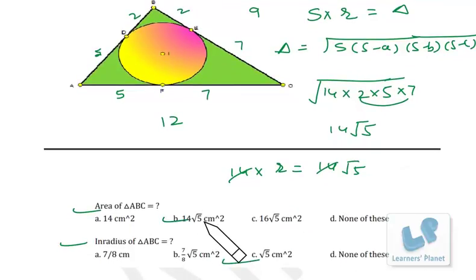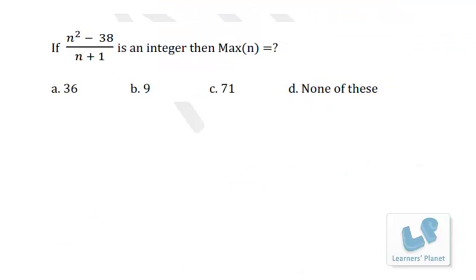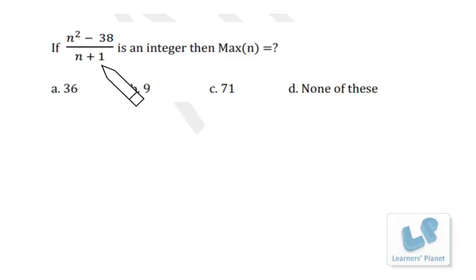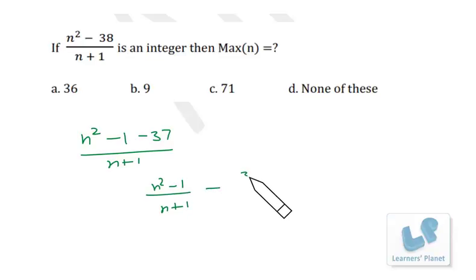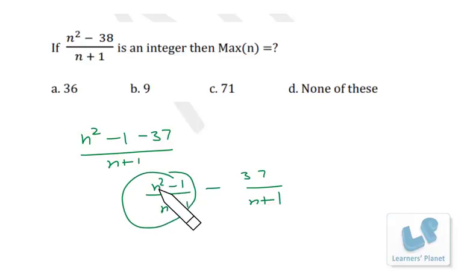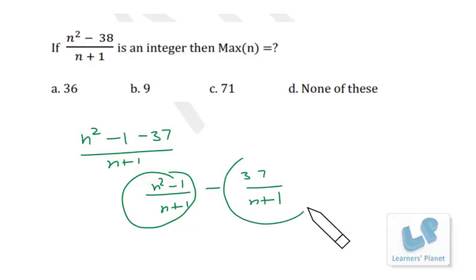Third problem: if (n² − 38)/(n + 1) is an integer, find the maximum value of n. Rewrite the numerator: n² − 38 = (n² − 1) − 37. So the expression becomes (n² − 1)/(n + 1) − 37/(n + 1). Since n² − 1 = (n−1)(n+1), the first term is always an integer.